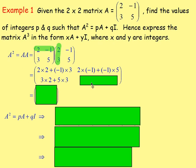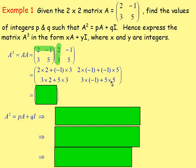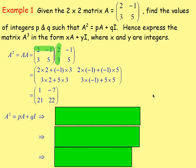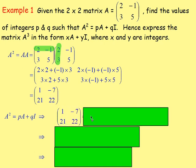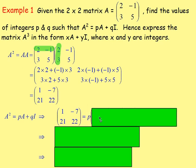That gives us A² = [1, -7; 21, 22]. We know that A² equals PA plus QI, so we can set up: the matrix [1, -7; 21, 22] is equal to P times [2, -1; 3, 5] plus Q times the identity matrix [1, 0; 0, 1].